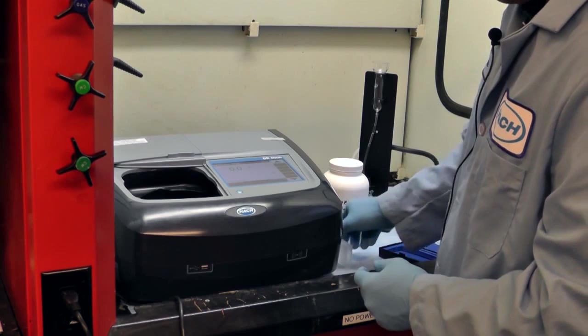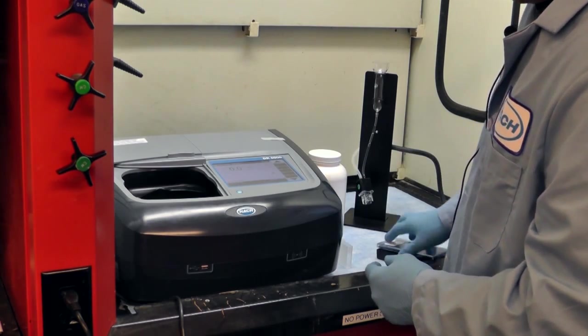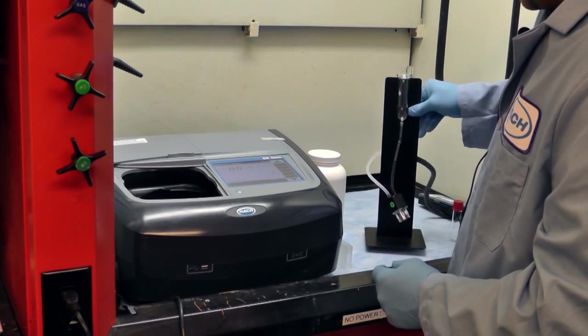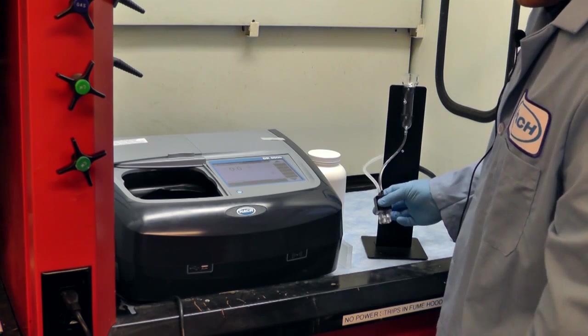This method can also be performed using the flow through cell. Here I have it hooked up to the pour through apparatus. You can also use this with our sipper.